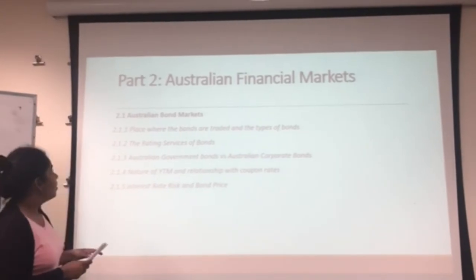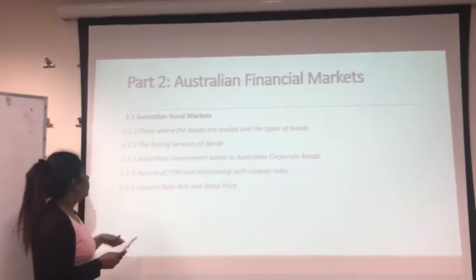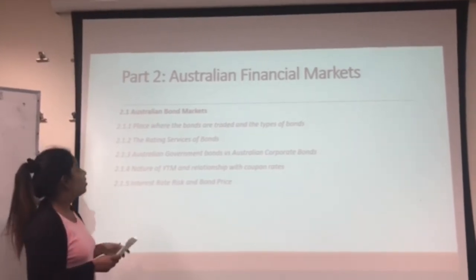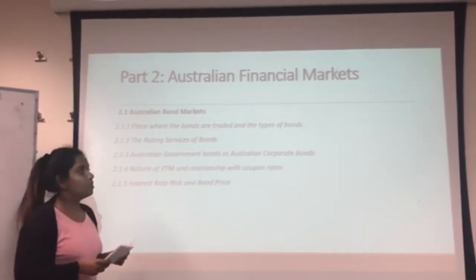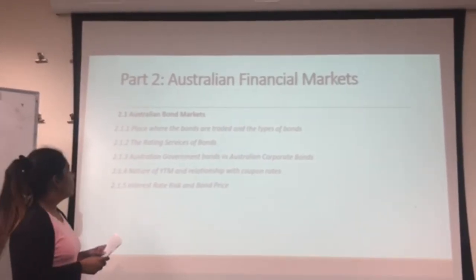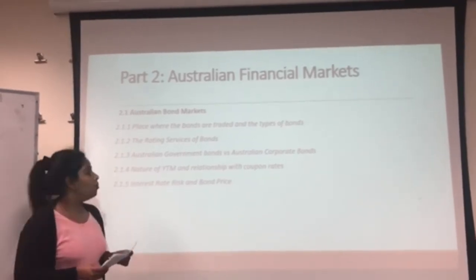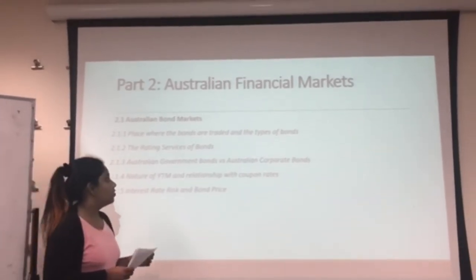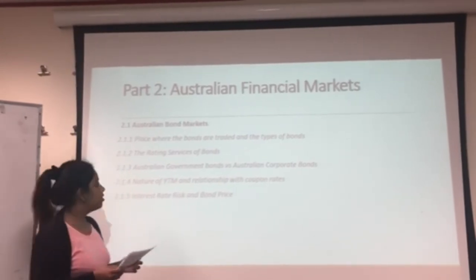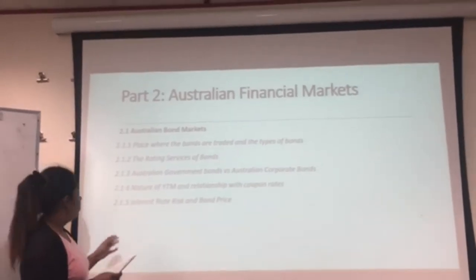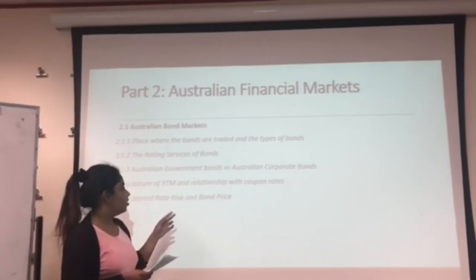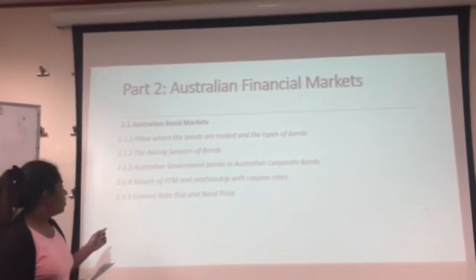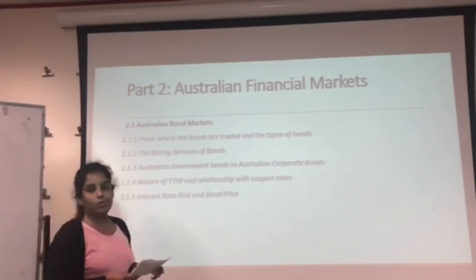Under Australian bond markets, there are five categories: first, the place where bonds are traded and types of bonds; second, the rating services of bonds; third, Australian government bonds versus Australian corporate bonds; fourth, the nature of the yield-to-maturity relationship with coupon rates; and lastly, interest rates and bond prices.